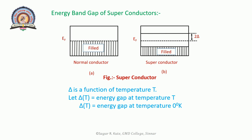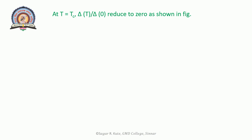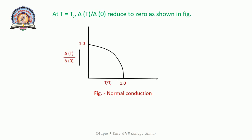Delta is a function of temperature T. Let delta(T) be the energy gap at temperature T, and delta(0) be the energy gap at 0 Kelvin. The ratio delta(T)/delta(0) is the reduced energy gap and T/Tc is the reduced temperature. The relation is: delta(T)/delta(0) equals 1.74 times the square root of (1 minus T/Tc). From this expression, it is clear that the energy gap decreases continuously as T/Tc increases. At T equal to Tc, delta(T)/delta(0) reduces to 0, as shown in this figure.